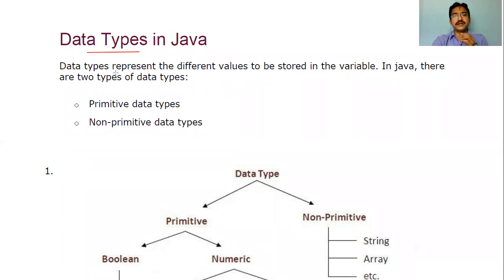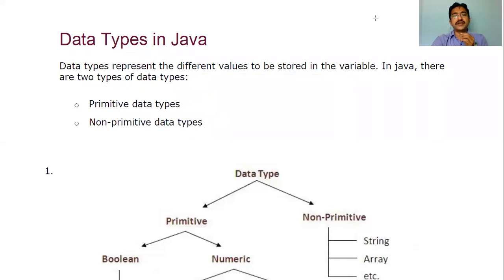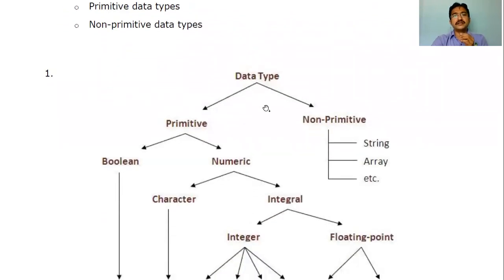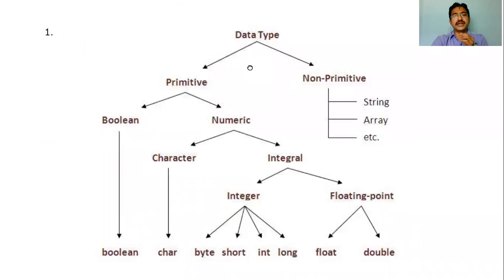In simpler terms, a data type represents the different values to be stored in a variable. In Java, we have two types of data types: one is primitive and another is non-primitive. Let me see this graphically — the entire data type concept is clearly shown in this figure.